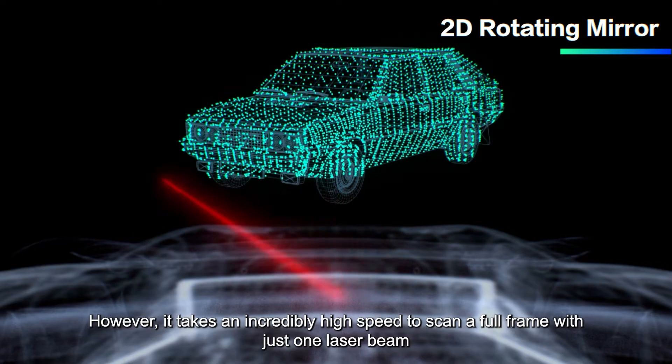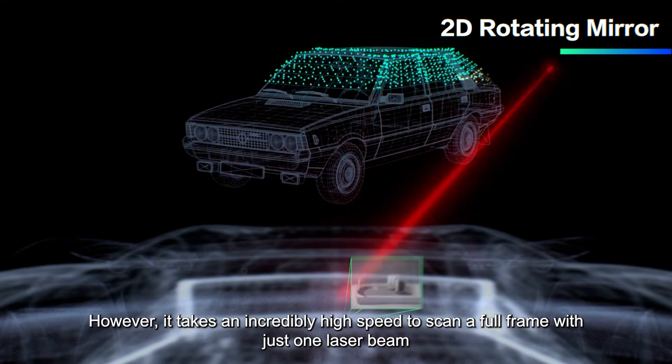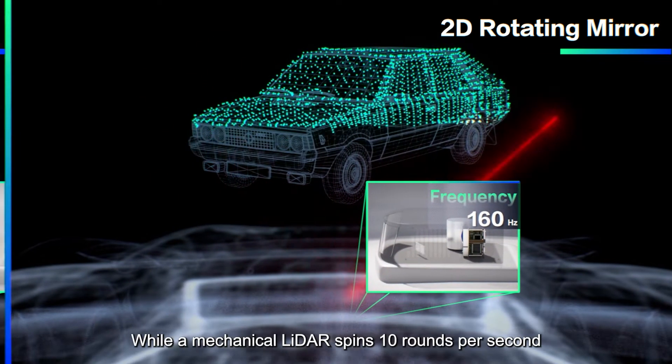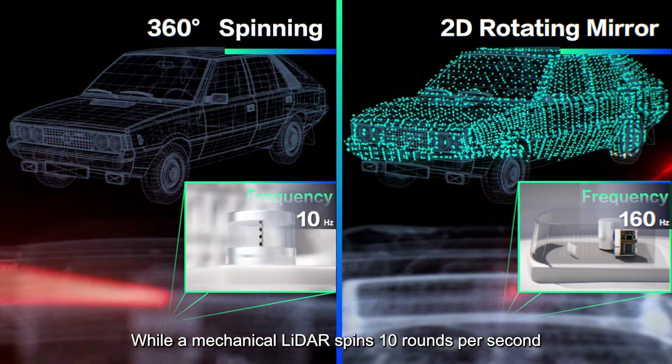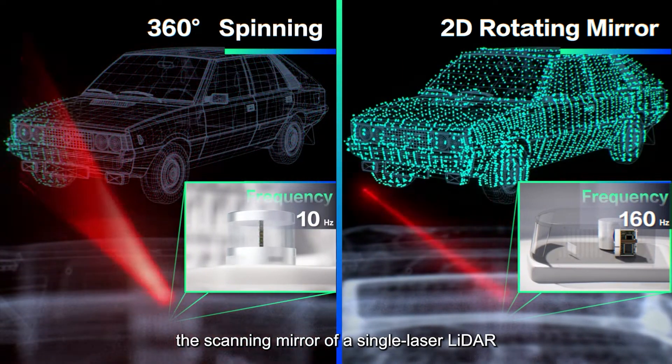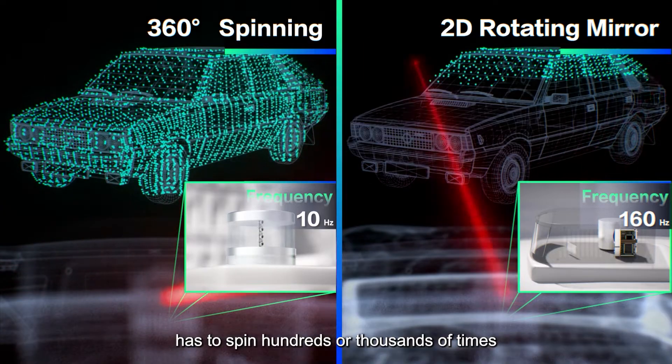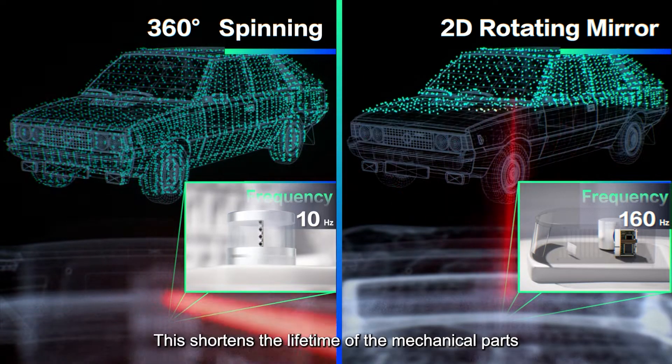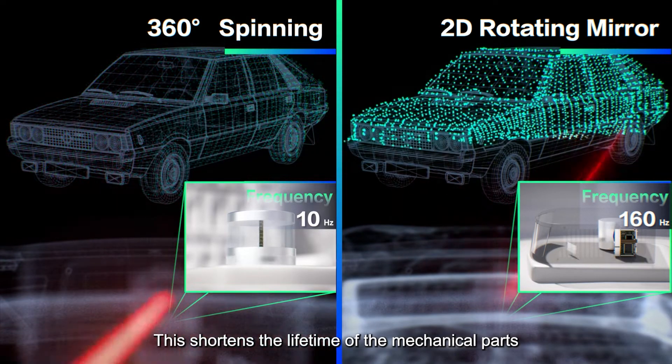However, it takes an incredibly high speed to scan a full frame with just one laser beam. While a mechanical LiDAR spins 10 rounds per second, the scanning mirror of a single laser LiDAR has to spin hundreds or thousands of times. This shortens the lifetime of the mechanical parts.